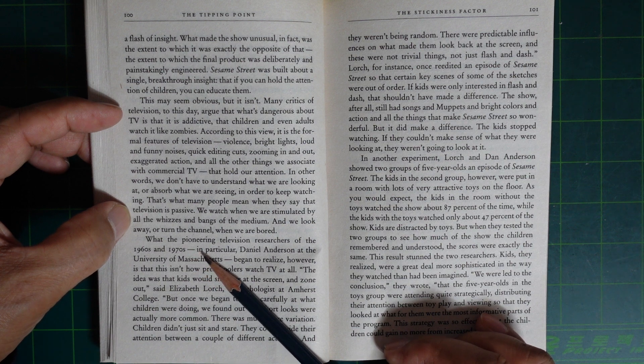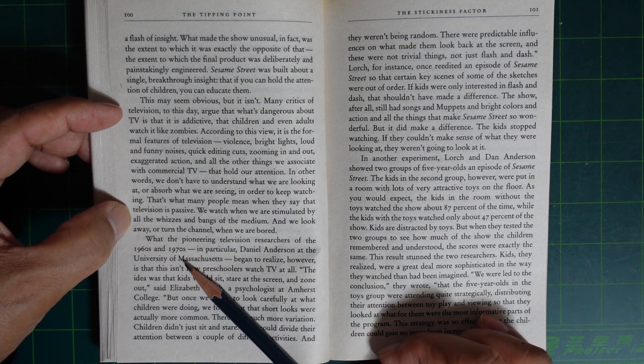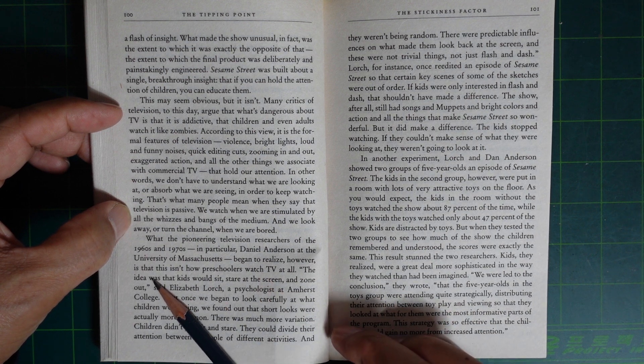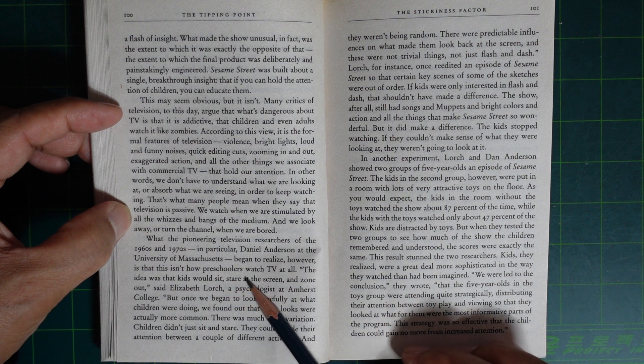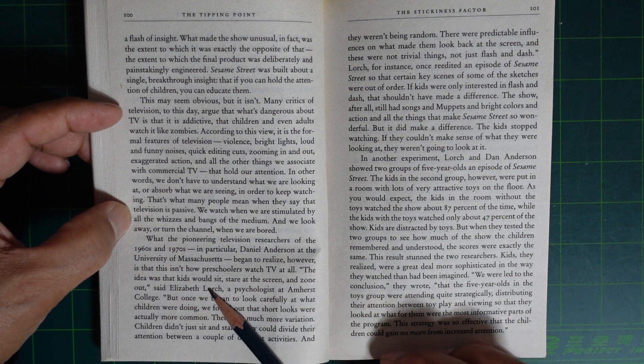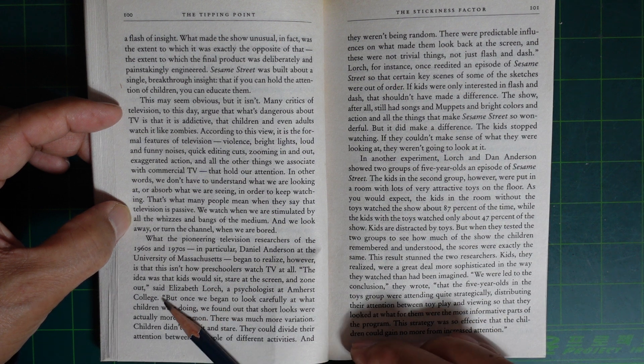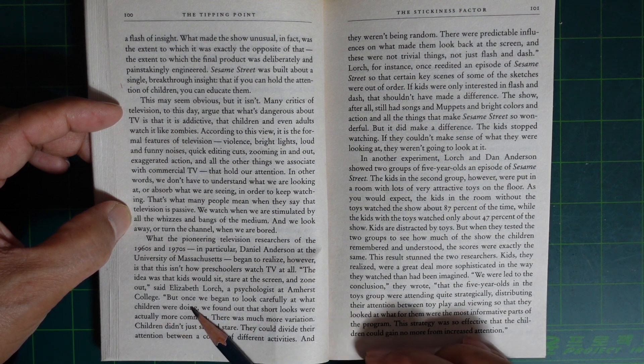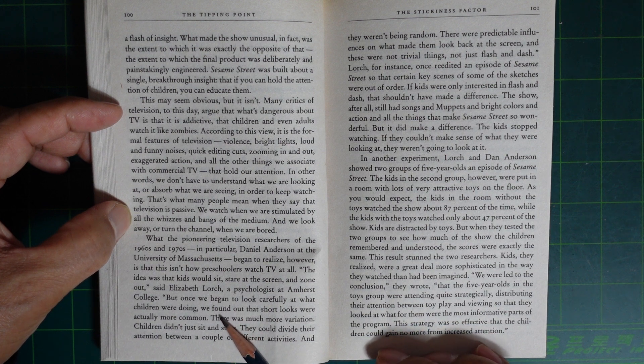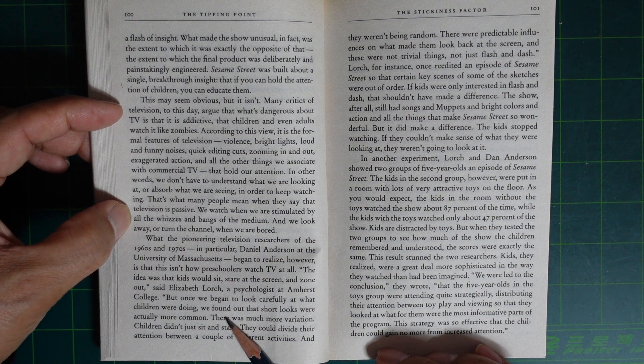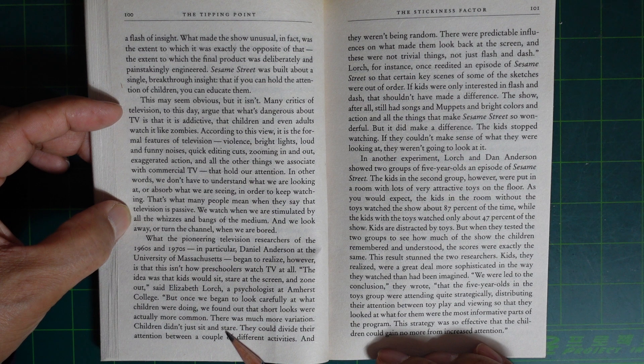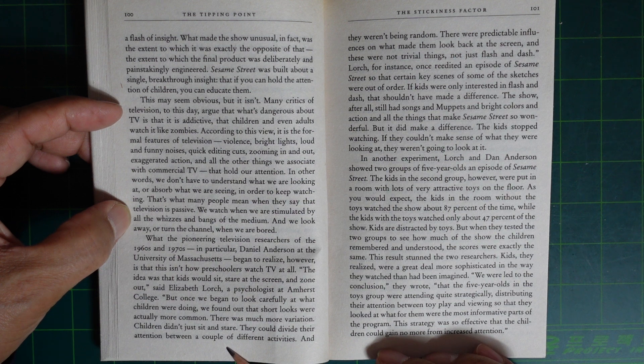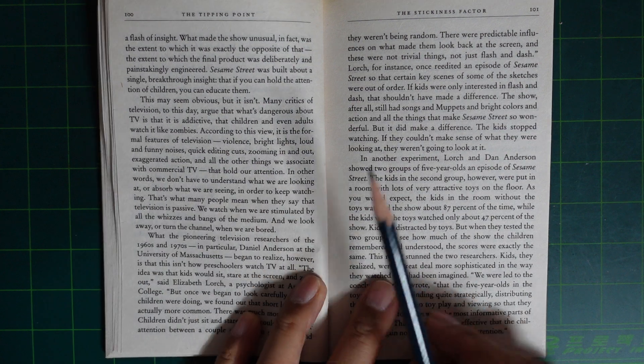But the pioneering television researchers of the 1960s and 1970s, in particular Daniel Anderson at the University of Massachusetts, began to realize that this isn't how preschoolers watch TV at all. The idea was that kids would sit, stare at the screen, and zone out. Elvis Roche, the psychologist at the college, said, 'Once we began to look carefully at what children were doing, we found out the short looks were actually more common. There was much more variation. Children didn't just sit and stare. They could divide their attention between a couple of different activities, and they weren't random.'